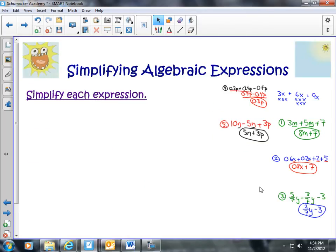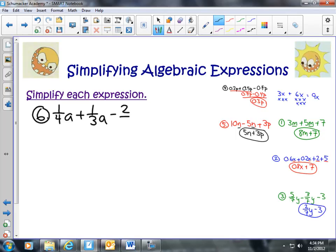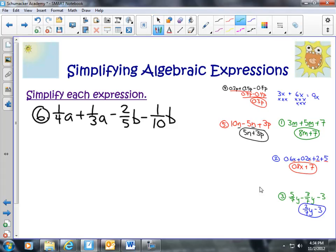Okay. Here is our last example of just simplifying expressions. And I have one more thing we're going to do after that. All right. What if we have for number 6? We have 1 4th a plus 1 3rd a minus 2 5ths b minus 1 10th b. Well, the very first thing I think we need to do is I think we need to find common denominators. Now, you only have to do the common denominators within the like terms. It doesn't matter if a and b are common denominators because you can't add them together. We only need to worry about the a's and, on a separate note, we need to worry about the b's.